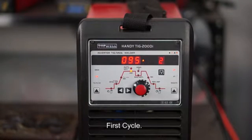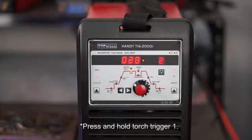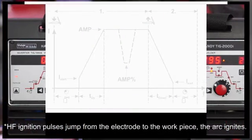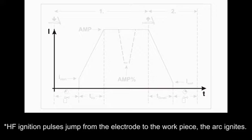First circle. Press and hold trigger 1. The gas preflow time elapses. HF ignition pulses jump from the electrode to the workpiece. The arc ignites.